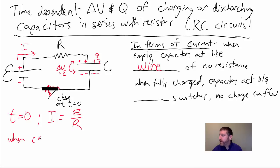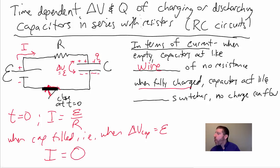When the cap is filled, i.e., when delta V across the cap equals the EMF, then the current will equal zero. There's no more room. No more charging can get on there. So, when fully charged, the capacitor acts like open switches. Capacitors act like open switches. No charge can flow.